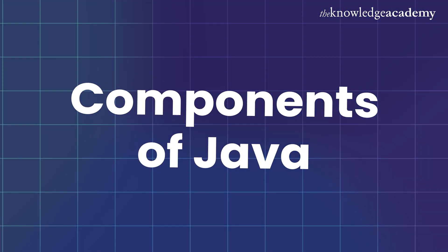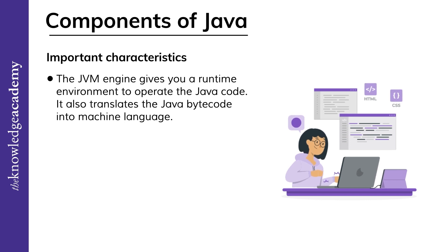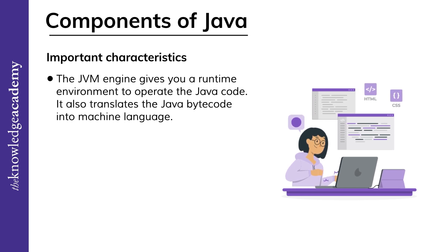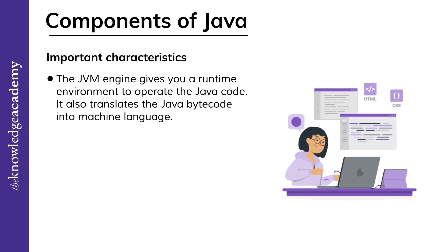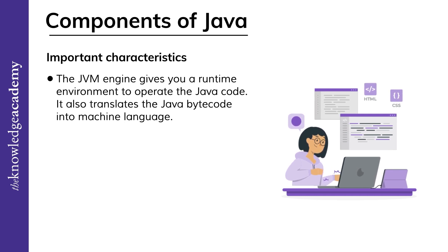Now let's dive into the components of Java. First up, let's talk about Java Virtual Machine, or the JVM. The JVM engine gives you a runtime environment to operate Java code and translates Java bytecode into machine language. The JVM is also part of the Java Runtime Environment, or JRE, which exists to create and run any Java application. The JVM receives the produced code from the Java compiler and facilitates platform independence for executing Java source code. This means that once you run Java on any program, you can run it on any platform. The JVM also brings a compiler known as Just-In-Time, or JIT, that converts Java source code into machine language code, making Java programs run much faster than other applications.